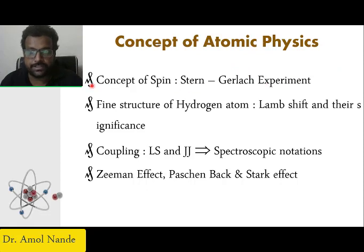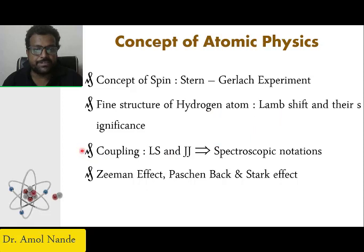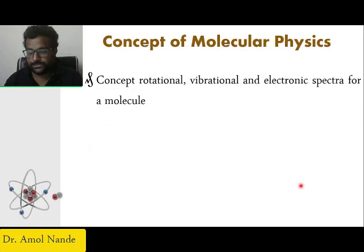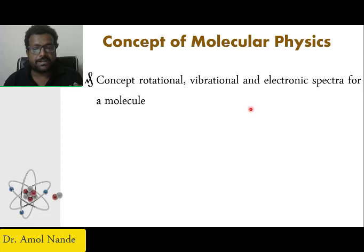Then the Zeeman effect. All these quantities are basically under atomic physics. We will see the concept of spin, explained by the Stern-Gerlach experiment, hyperfine structure of hydrogen atom, Lamb shift and its significance, LS and JJ coupling which is spectroscopic notation, then Zeeman effect, Paschen-Back effect and Stark effect — these are fundamental things used to explain atomic physics. Similarly in molecular physics we will learn rotational spectroscopy, rotational spectra, vibrational spectra, and electronic spectra. These are fundamental and this comes under molecular spectroscopy.